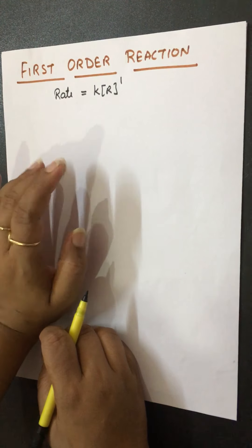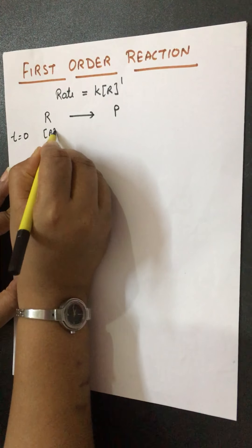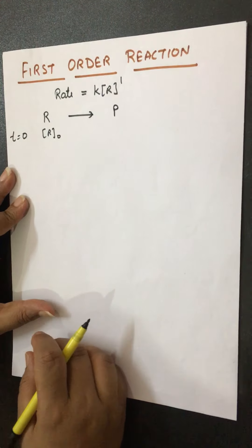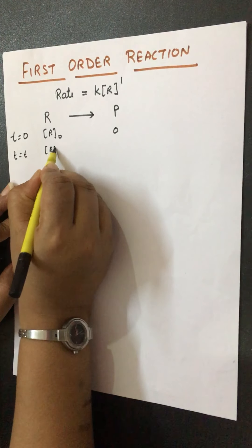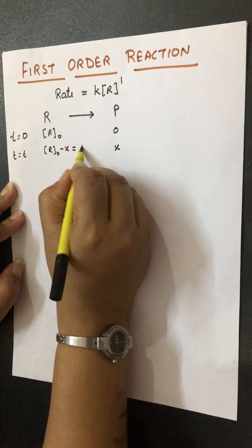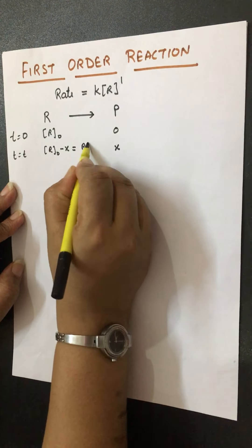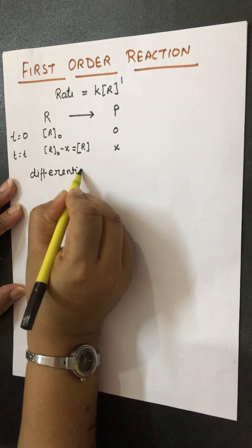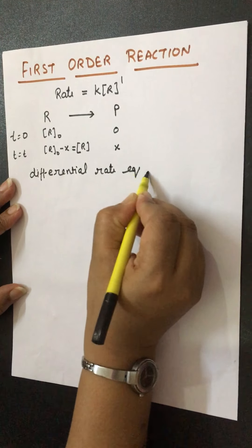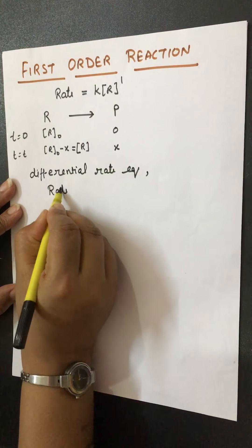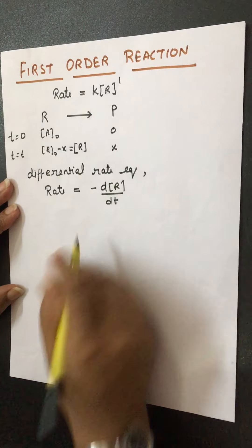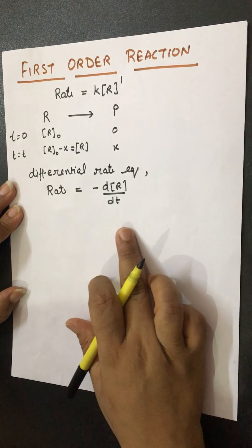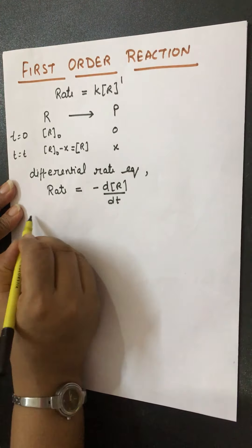We can write both the differential rate equation and the rate law expression for this reaction. At time T₀, the reactant concentration is the initial concentration R₀ and product will be zero. At time T, some concentration of reactant will have converted into product. R₀ is the initial concentration of reactant and R is the concentration of reactant after time T. According to the differential rate equation, rate equals to minus dR over dT, meaning decrease in concentration of reactant.